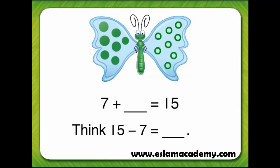15 minus 7 equals 8. So, 7 plus 8 equals 15. 8 is the missing addend.